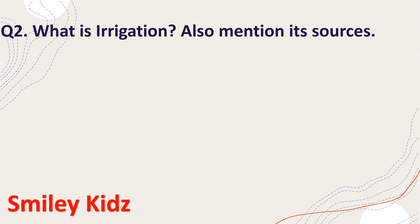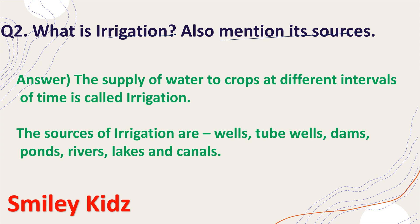Question 2: What is irrigation? Also mention its sources. The supply of water to the crops at different intervals is called irrigation. The sources of irrigation are wells, tube wells, dams, ponds, rivers, lakes, and canals.